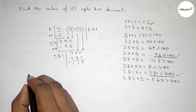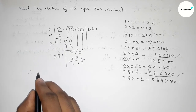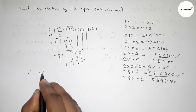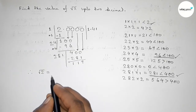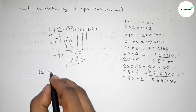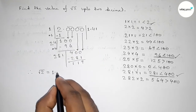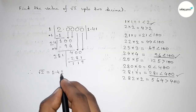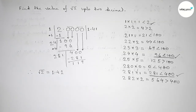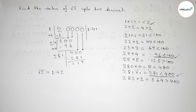Therefore, the value of root 2 up to two decimal places is 1.41. That is the process to find out the value of root 2 up to two decimal places using the division method. That's all — thanks for watching. If this video is helpful to you, please share it.